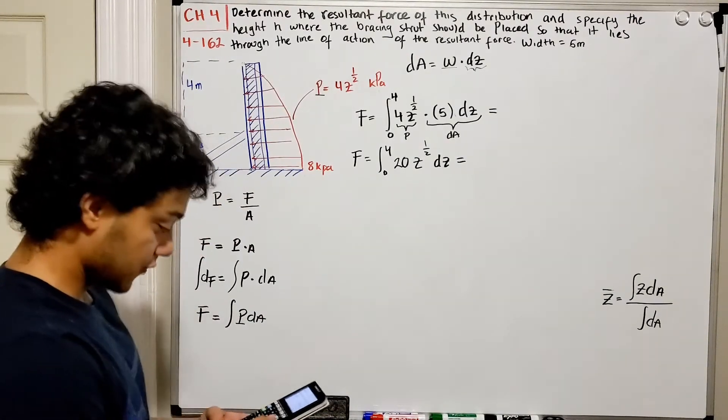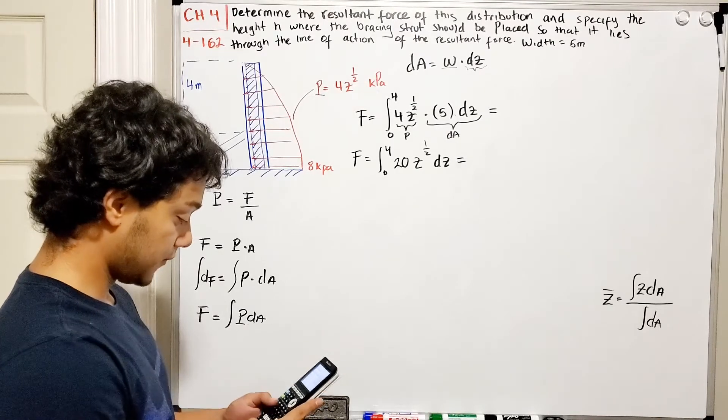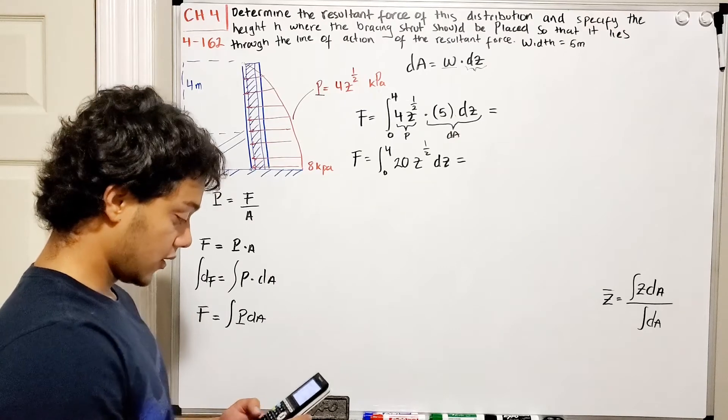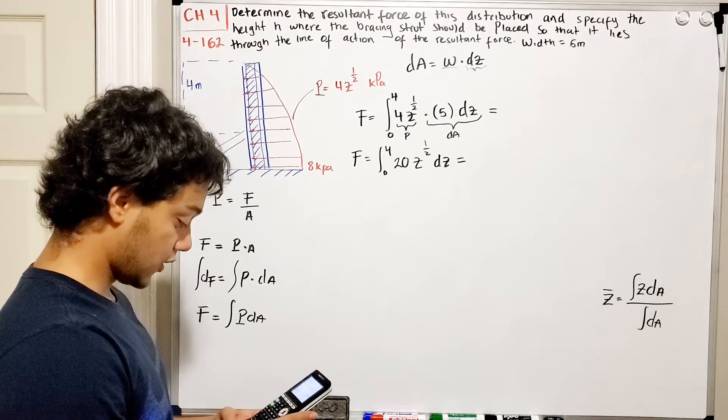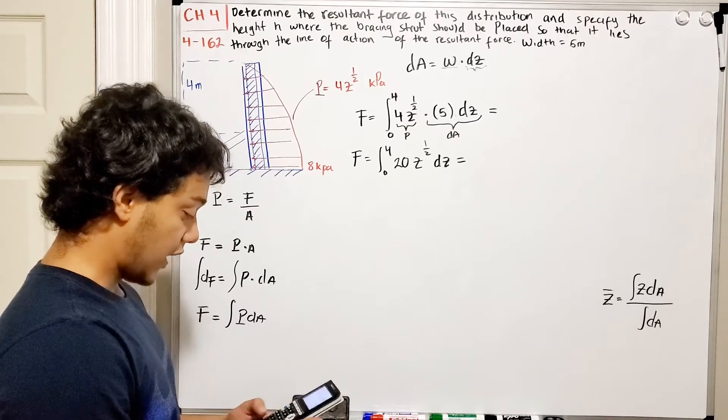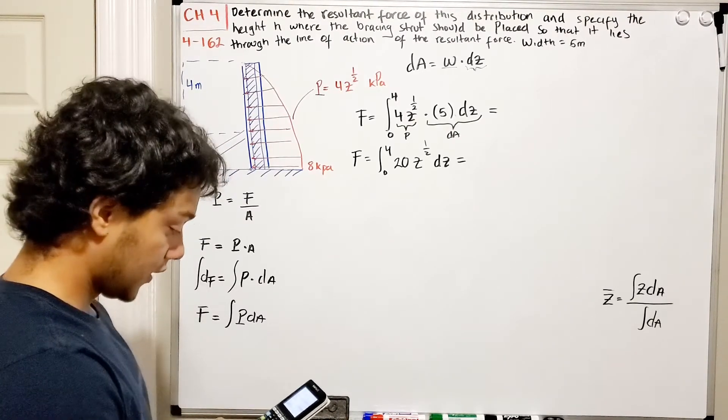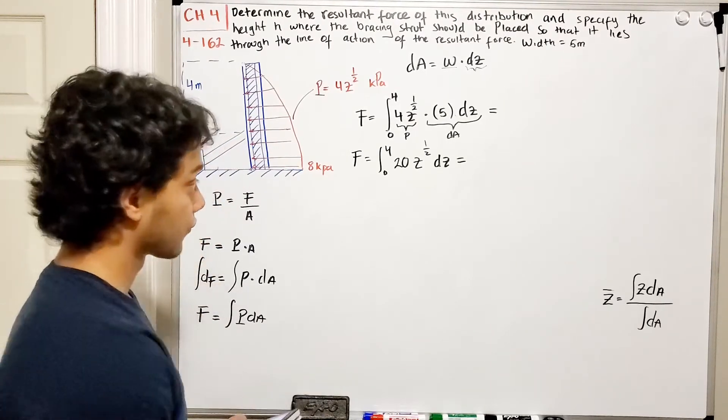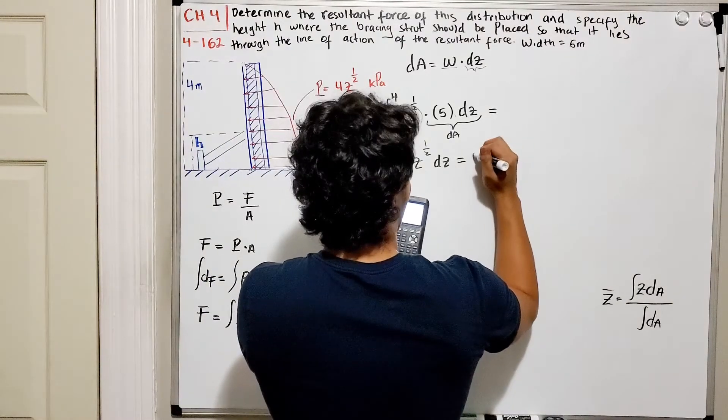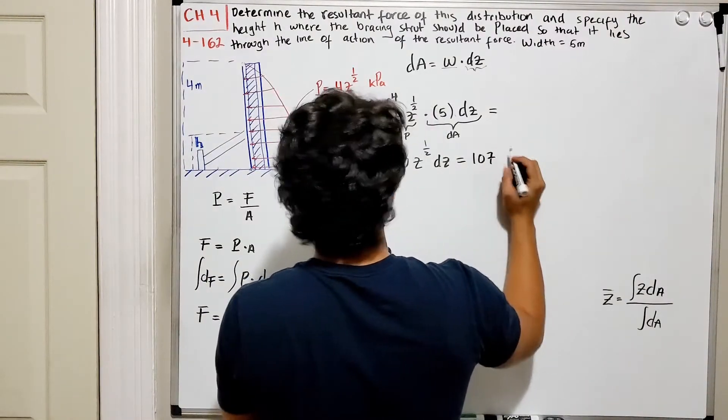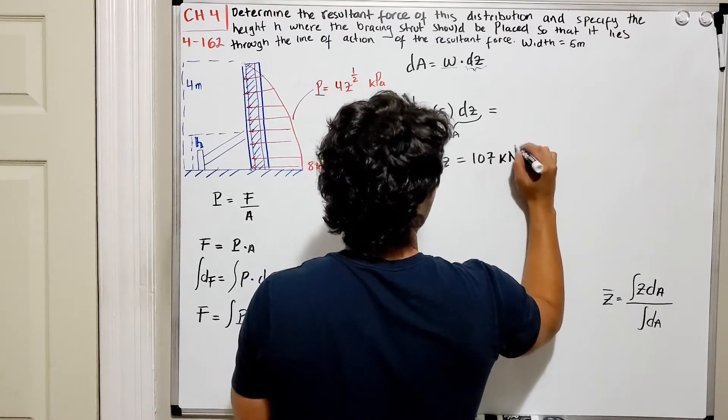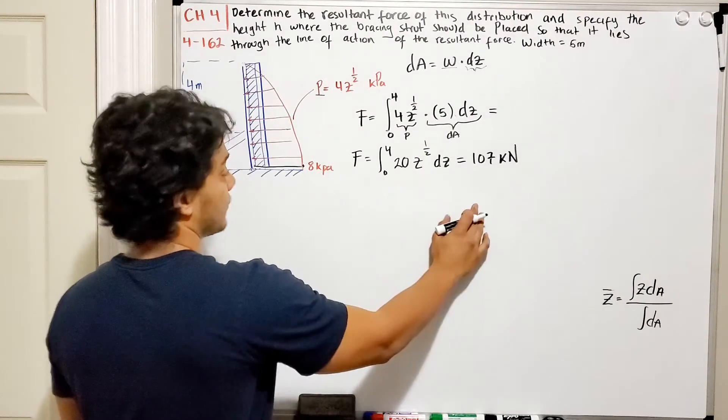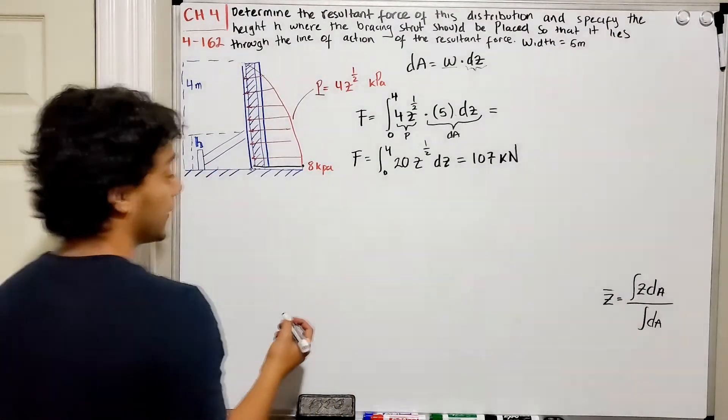We go integral from 0 to 4 of 20 multiplied by my variable to the power of 1 half. This is going to be equal to 107 kN. We found the magnitude of our resultant force. We need to find where this H is placed.